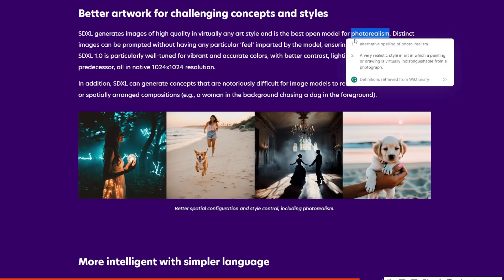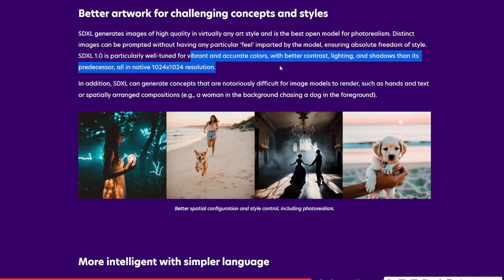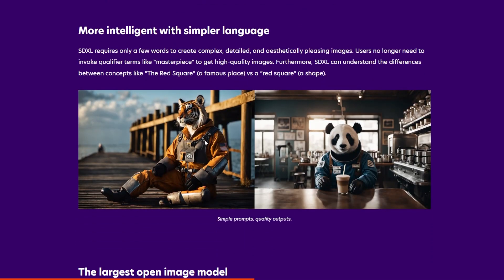It won't transfer its feel onto your artwork as some other models do. It's particularly well-tuned for vibrant and accurate colors with better contrast, lighting, and so on, with native 1024 by 1024 resolution. It's also reportedly good at generating hands, text, and arranged compositions — we will see about that. It is more intelligent with simpler language; things like 'Masterpiece' are apparently not needed anymore.